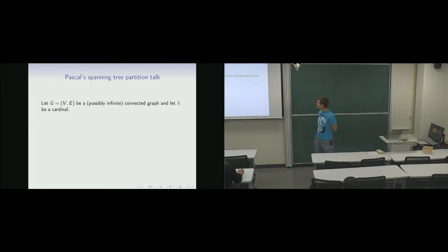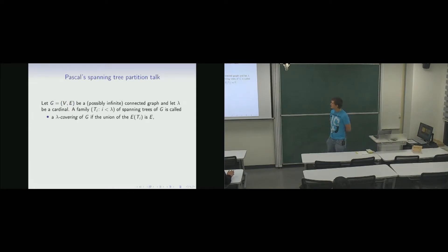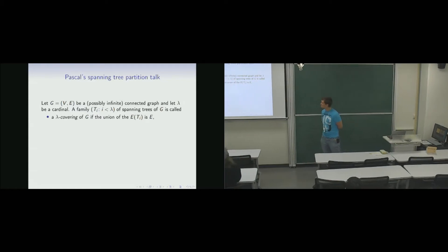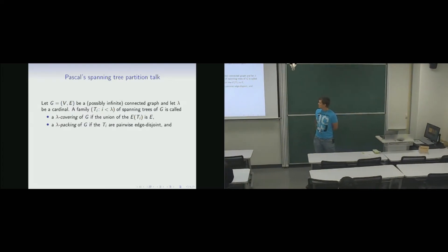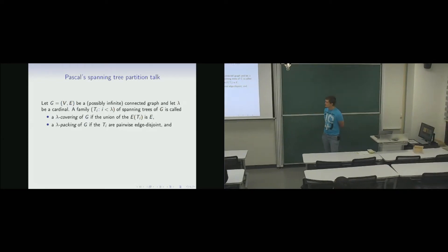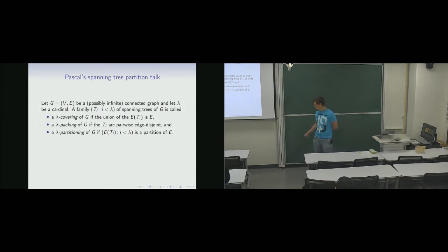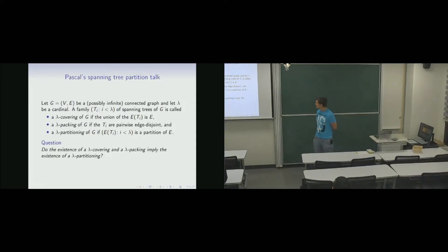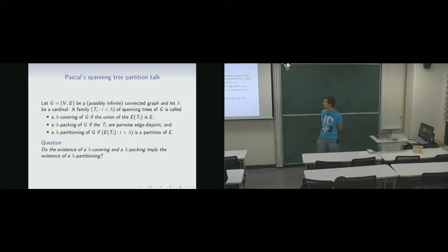We have a graph that is possibly infinite, and we have a cardinal lambda. A lambda covering of G is lambda many spanning trees of G such that they together cover all the edges. A lambda packing of G is lambda many spanning trees which are pairwise edge disjoint, and a lambda partitioning of G is lambda many spanning trees such that the edge sets form a partition of the edge set of the graph. The question is: if we have a lambda covering and also a lambda packing, do we necessarily have a lambda partitioning as well?